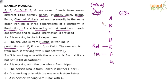If B doesn't work for HR, there are two possibilities: production or marketing. G is working only with the one who is from Kolkata, but not in HR department — so G is not from Kolkata, and they're not in HR, meaning production or marketing. F is working with the one from Jaipur, so F is not from Jaipur. A lot of negative statements have been given instead of direct assignments, so I think this linear format will not really help.